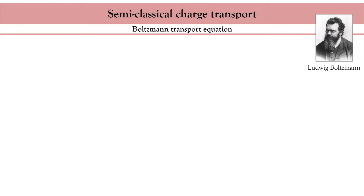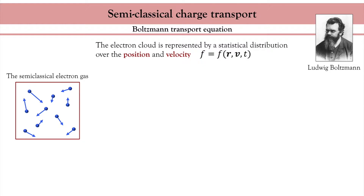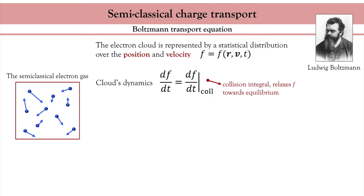We consider that the electron cloud travelling through the metal is represented by a statistical distribution over the position and velocity. Instead of tracking the transport properties of each individual electron, we track the behavior of the distribution itself. An important remark is that in the present theory, we assume that the electrons do not interact with each other. In this case, Boltzmann postulates that the rate of change of the statistical distribution is balanced by the collisions of the particles against defects and impurities.